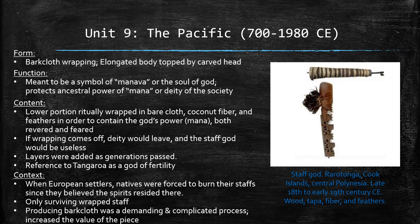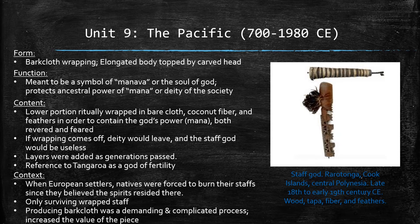For Unit 9, I chose the Staff God from Rarotonga, Cook Islands, made in the late 19th century from wood, tapa, fiber, and feathers. This piece was made to protect the mana, or soul, of the deity of the society. Generations would continue to add on layers to the staff, as layers prevented the mana from leaving, as it would become useless if it did leave. The entire village was involved in the process of preserving the staff and mana, as women would make the tapa and men would add on to it. As this was a tribute to Tangaroa, their primary god, and has passed down so many generations, it is clearly a symbol of identity for the natives of Cook Islands.